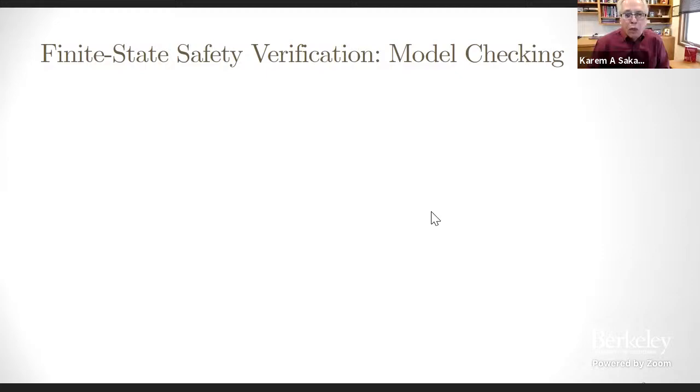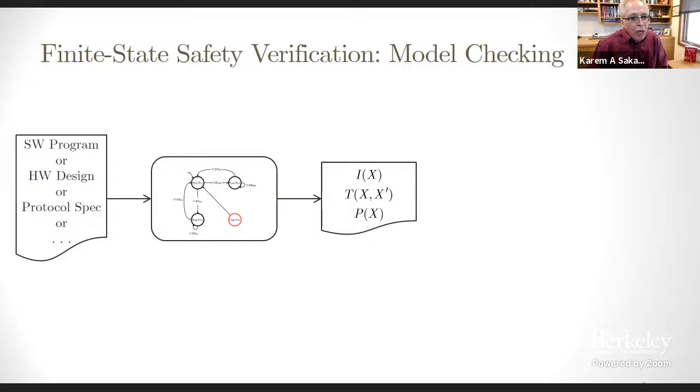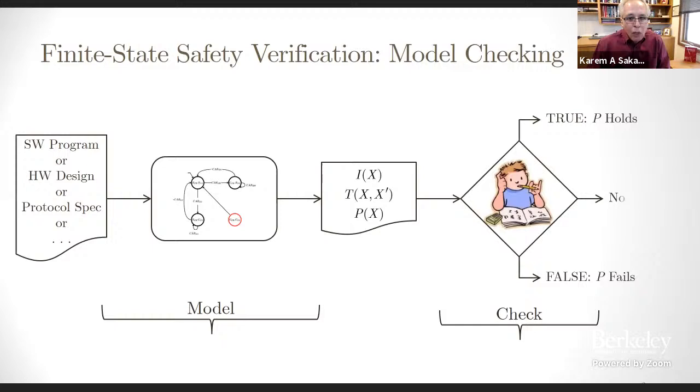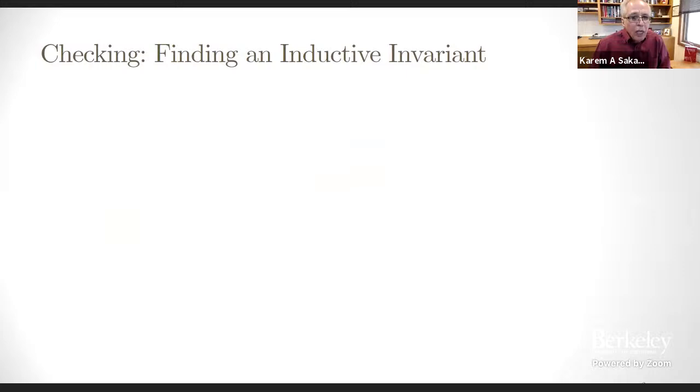So to set the stage for what I'm going to talk about today, let's quickly review some of the basic ingredients we need to solve this problem. Given a software program, a hardware design, a protocol spec, etc., we encode it as a finite transition system in some suitable logic over a set of state variables X. We will use I, T, and P to denote the predicates that specify the initial state, the transition relation, and the safety property. This is the modeling step of model checking. Now, the checking step analyzes this model to either show that P holds, it is violated, or it may fail to provide an answer.